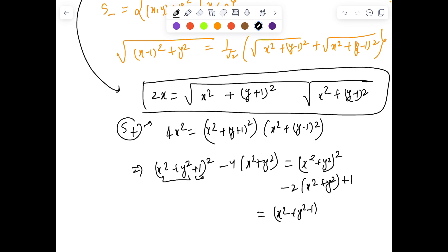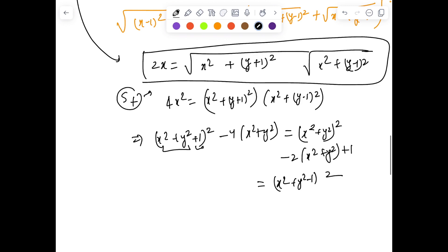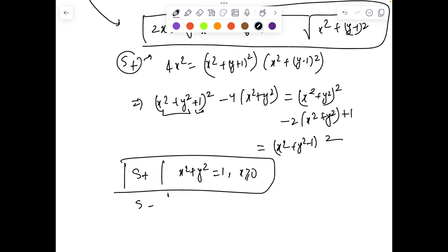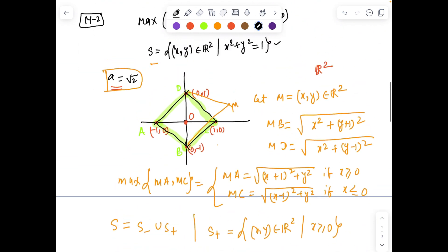So this shows S⁺ is the circumference of the circle x² + y² = 1 for x ≥ 0. In the same fashion we can find S⁻ will be the semi-circumference for x² + y² = 1 for x ≤ 0, which together proves that S is the unit circumference x² + y² = 1.